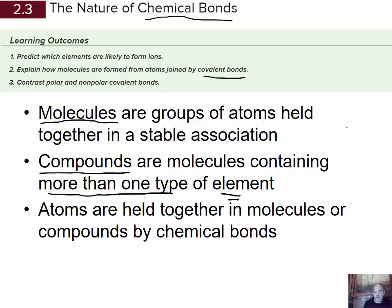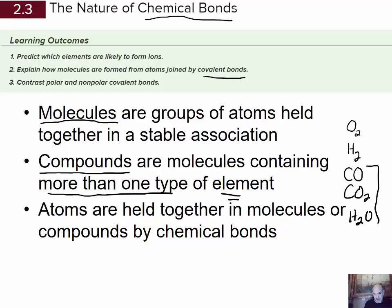What is a molecule? Oxygen, for example, is never by itself — it's always two oxygen atoms combined, so it's always written as O2. So here we have a molecule of oxygen. Hydrogen is the same — that's a molecule. But if I put two different types of elements together to form a molecule, we now have a compound: carbon monoxide, carbon dioxide, and water.